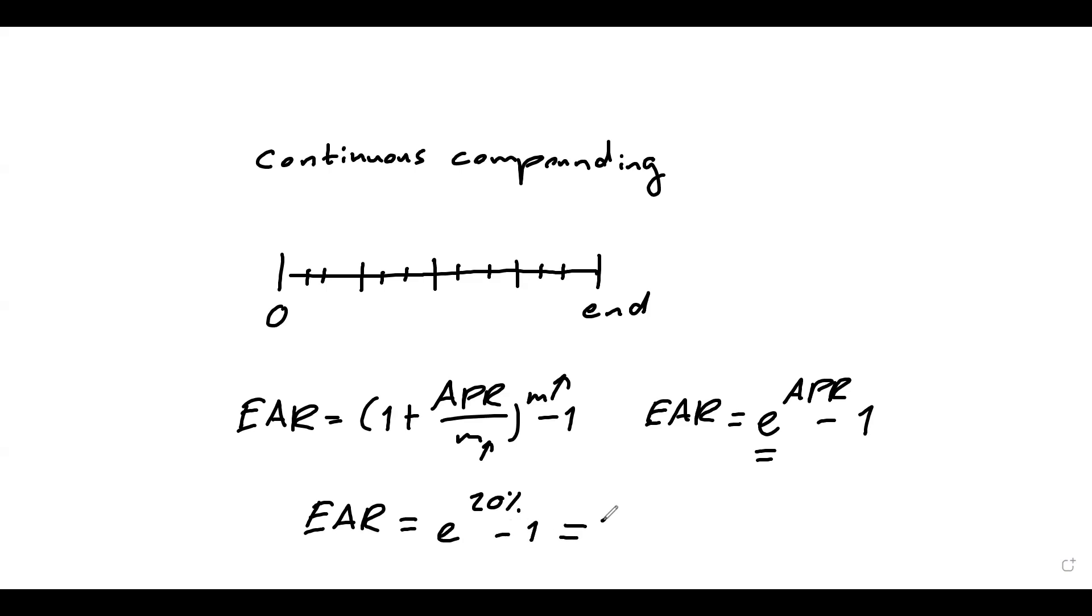And you might wonder, well, if we are continuously earning interest, why this is not becoming infinite? And the reason is simple. Because m gets quite high, yes, you are continuously earning interest payments, but they are getting smaller and smaller as well. So then the whole thing doesn't blow up.